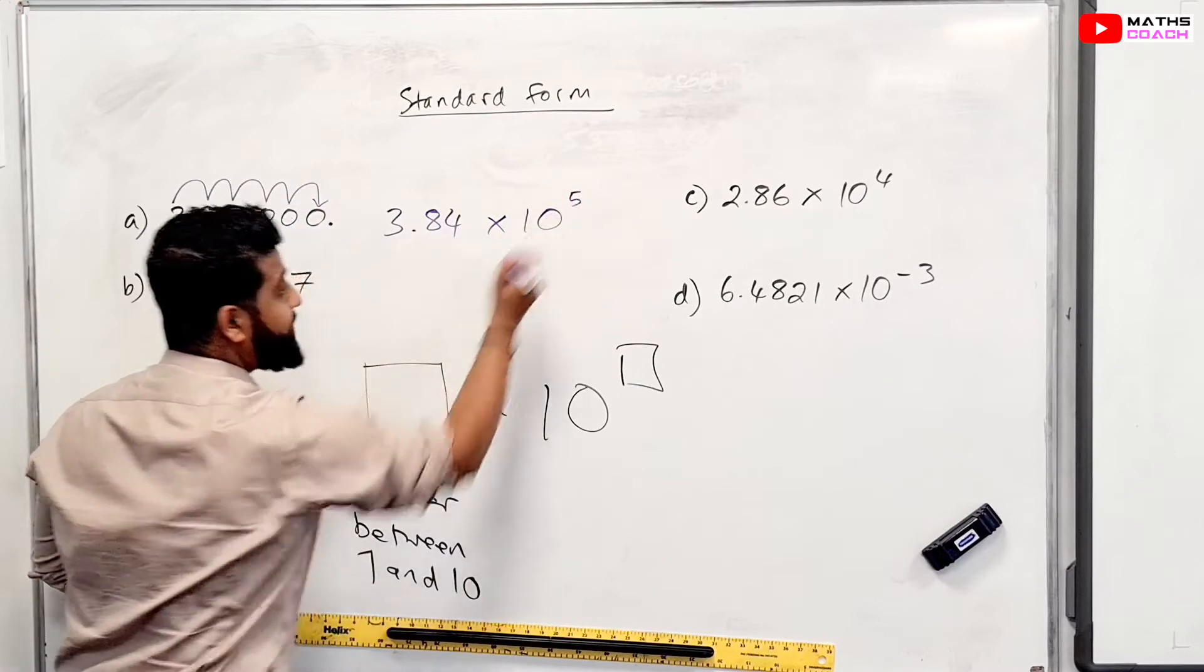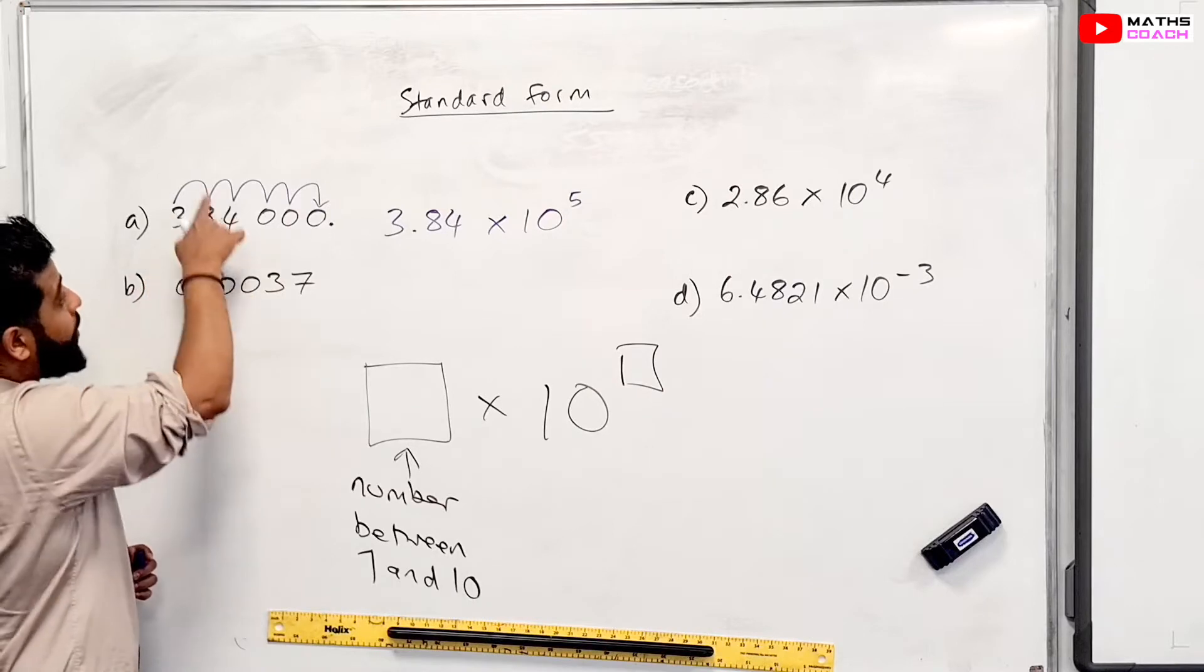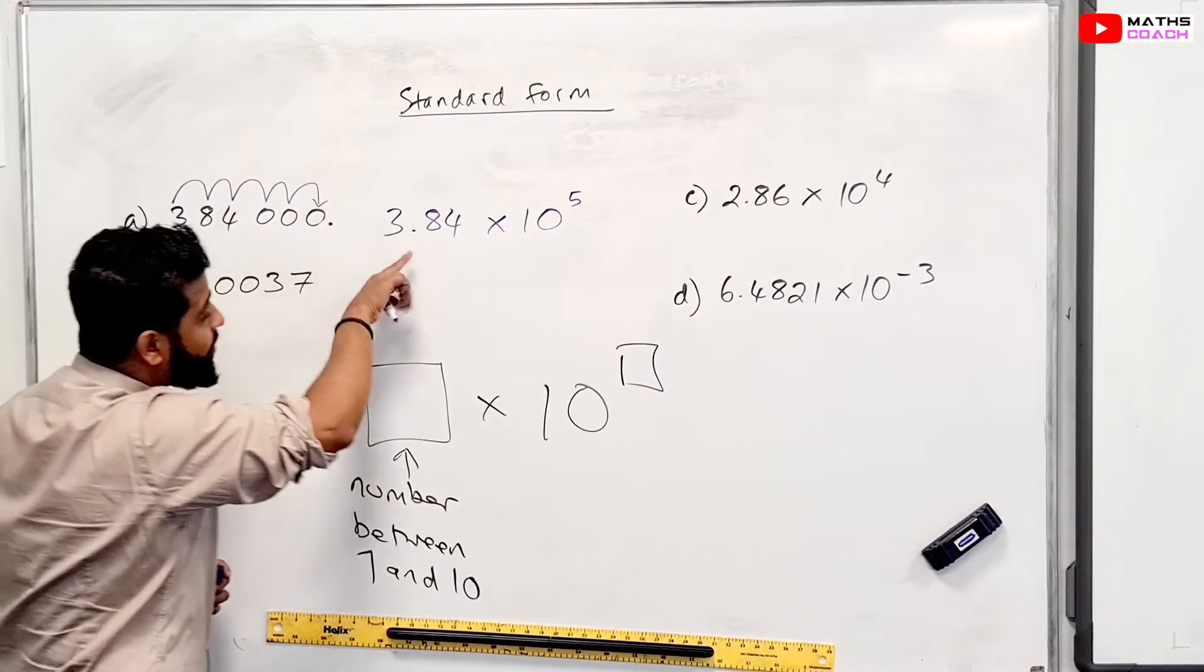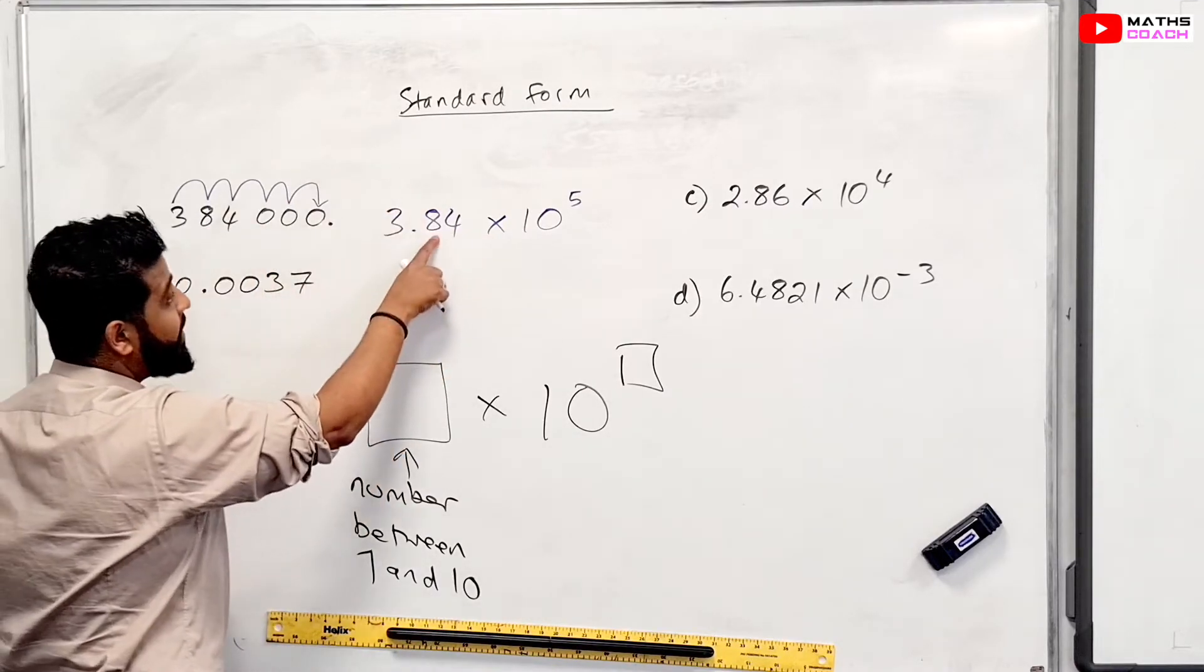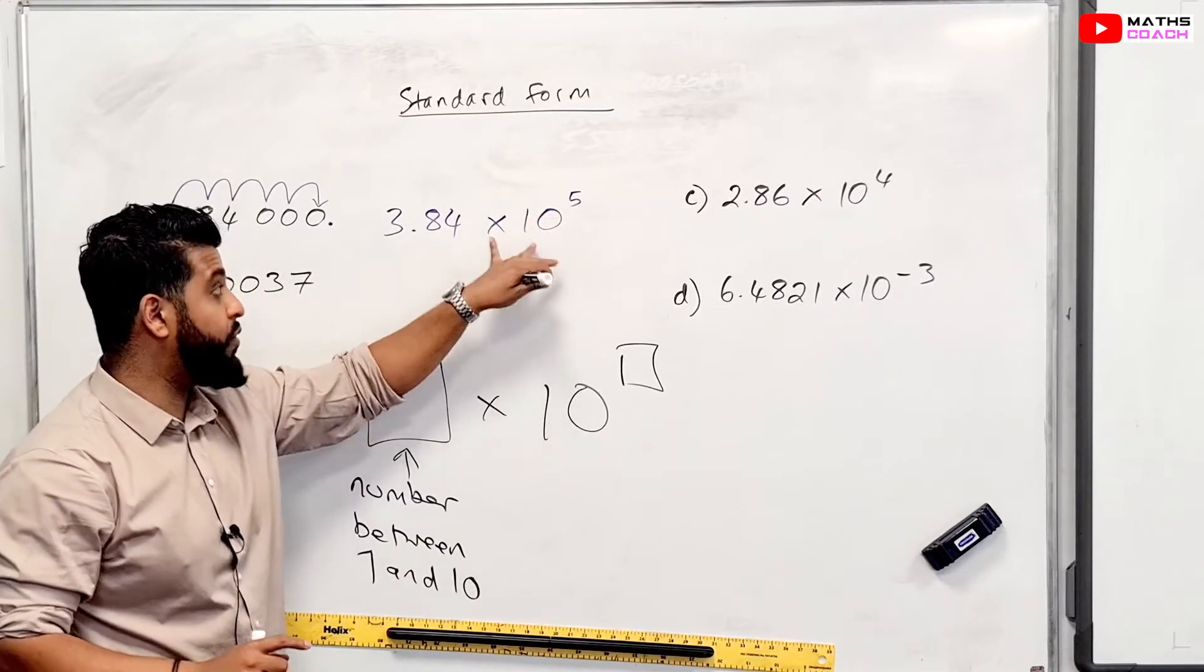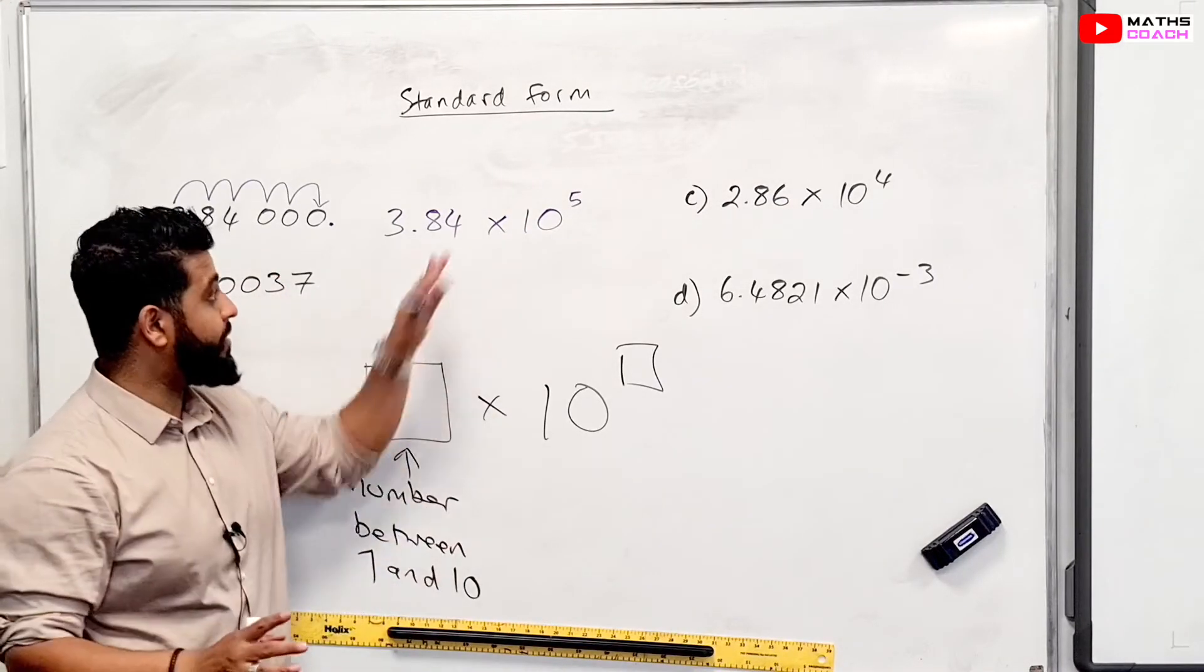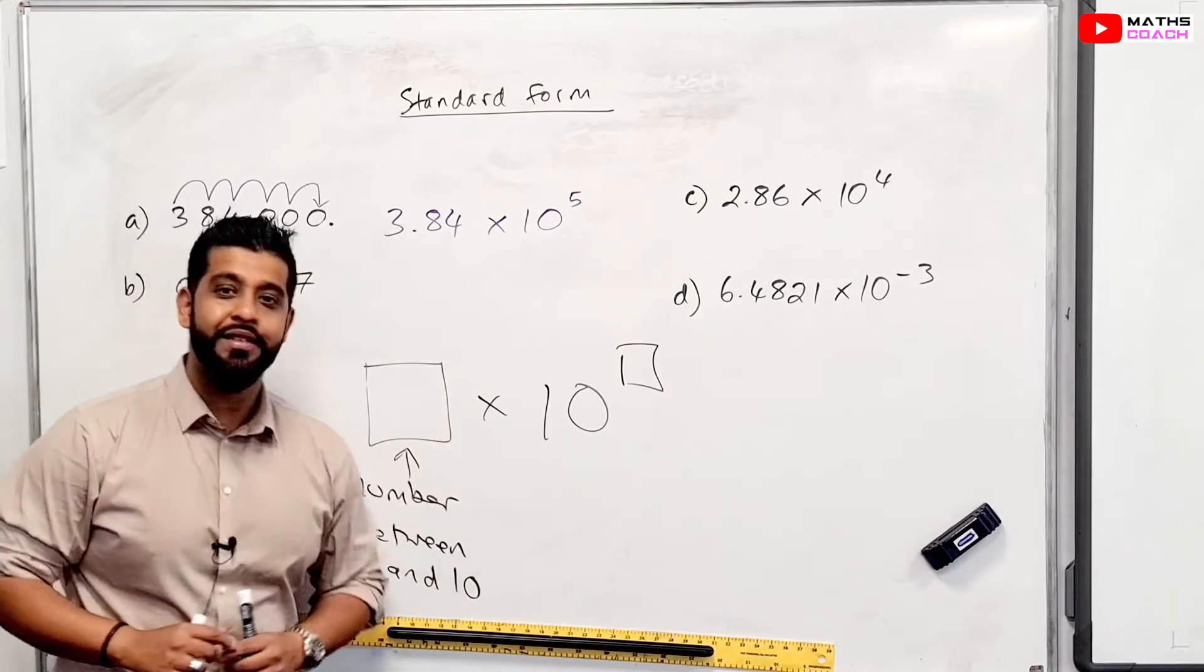So therefore, we are going to have a power of positive 5. And as this 3 goes to this position, this 8 and this 4 and all these zeros will be pushing along as well. So that's where they end up on the other side. But this is standard form, 3.84 times 10 to the power of 5. If you were to put this into your calculator, your calculator should give you this answer. If your calculator doesn't refuse to, that is, because sometimes calculators keep the answer in standard form.